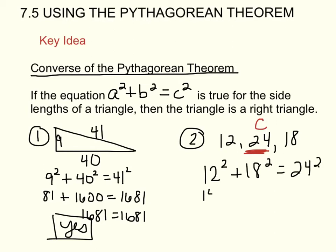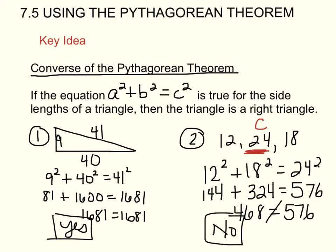12 times 12 is 144. 18 times 18 is 324. 24 times 24 is 576. 144 plus 324 is 468 equals 576. That is not a true statement. So no, this is not a right triangle.